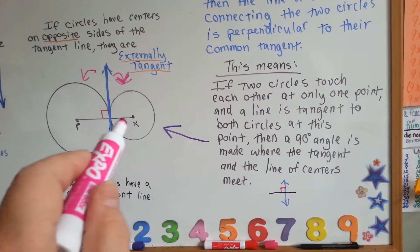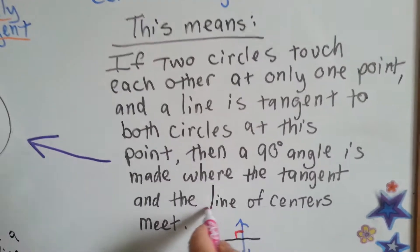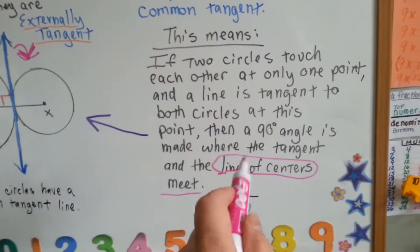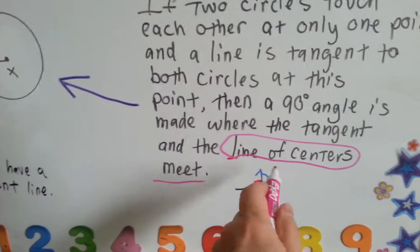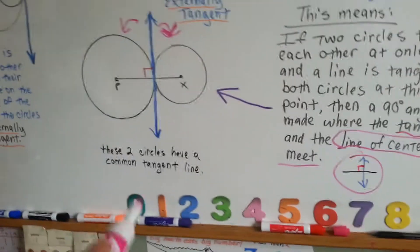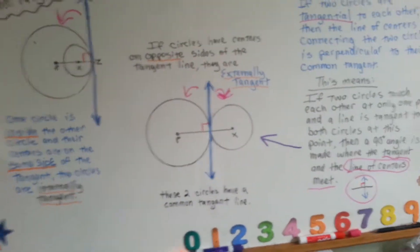See that? Where the lines of centers meet. So where the lines of centers meet and the tangent is going to make this 90 degree angle. Very, very important for proofs coming up.